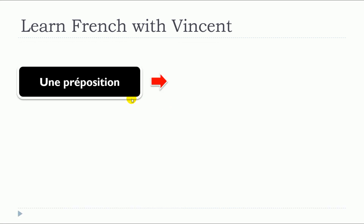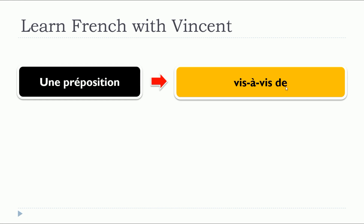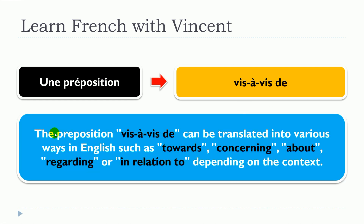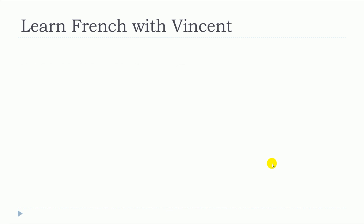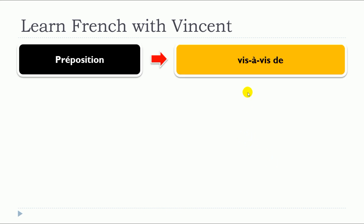This lesson is about vis-à-vis de. The preposition vis-à-vis de can be translated into various ways in English, such as towards, concerning, about, regarding, or in relation to, depending on the context. We will see four examples with vis-à-vis de.